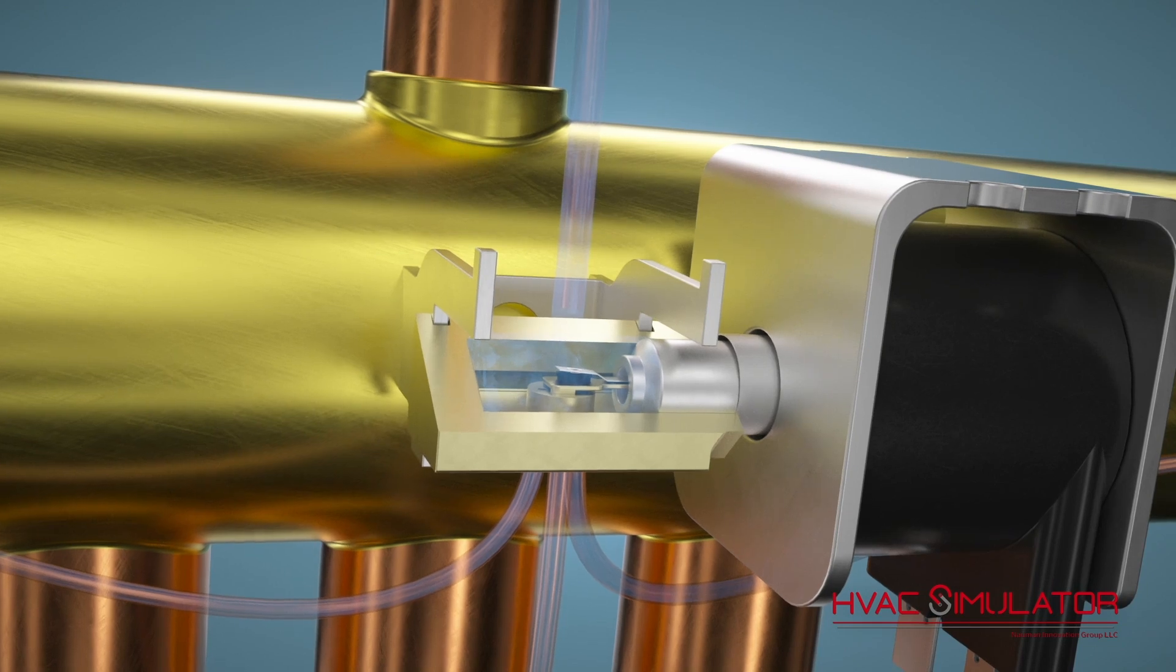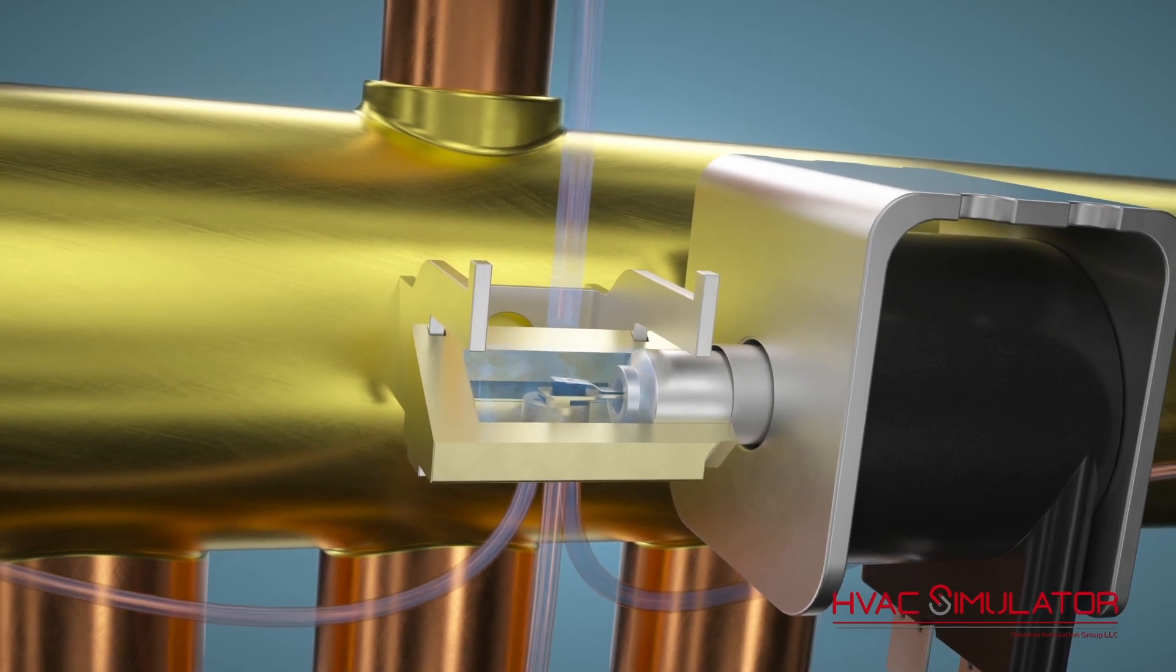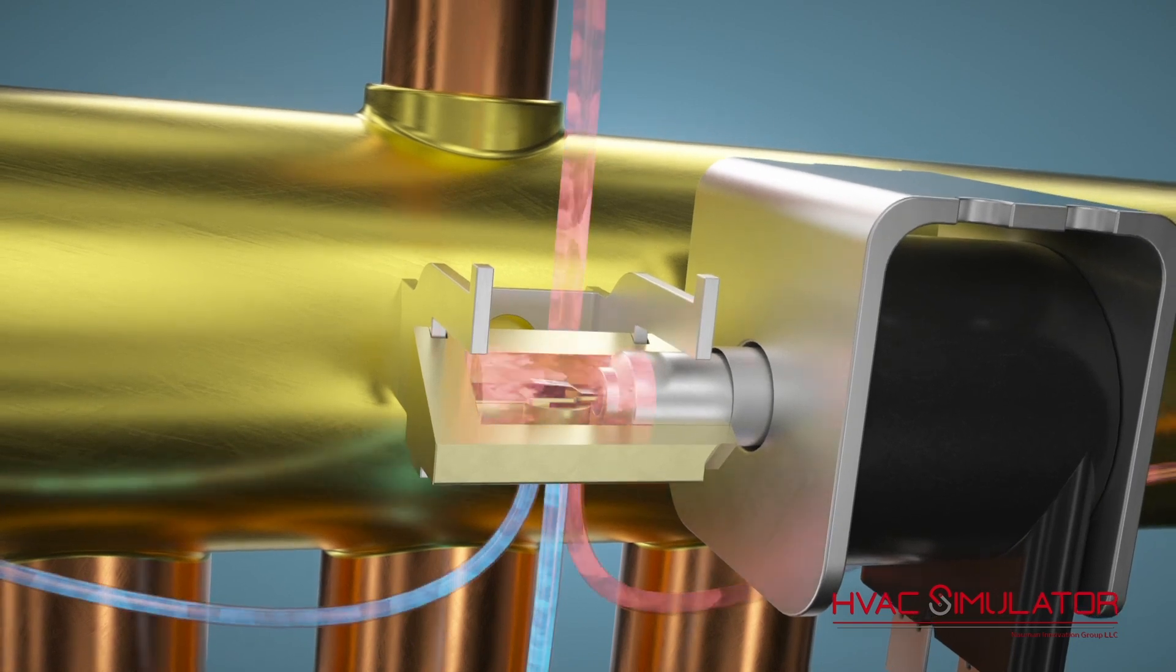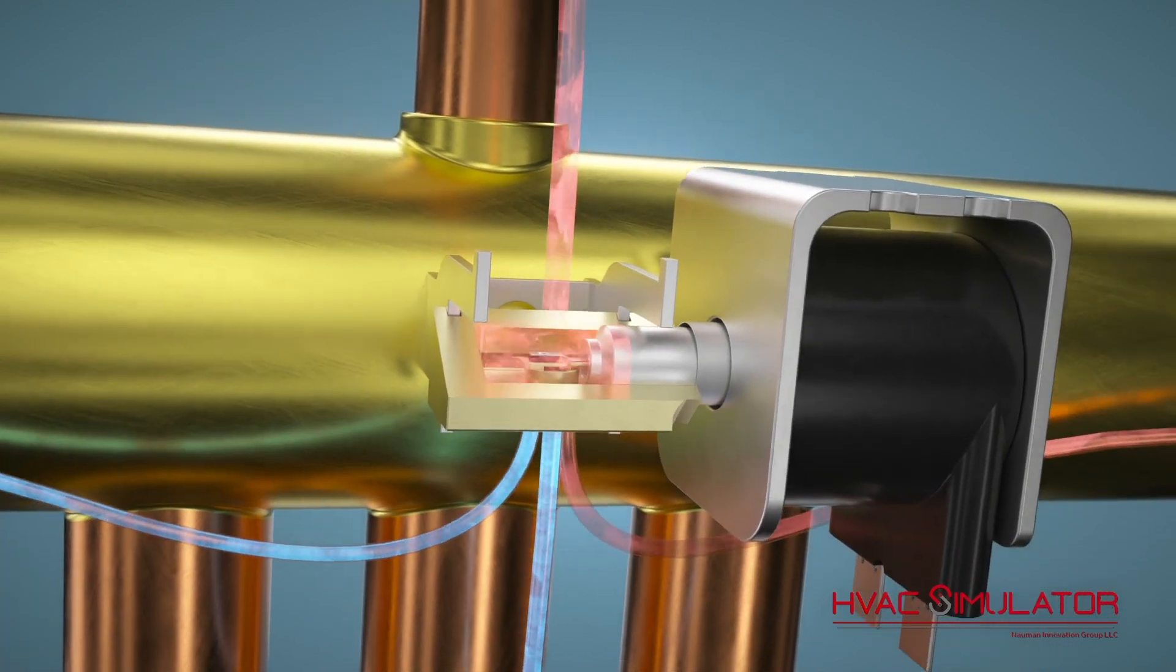When the system switches between heating and cooling, the solenoid coil de-energizes. The core spring causes the mechanical motion, resulting in the pressures changing on the outer capillary tubes.